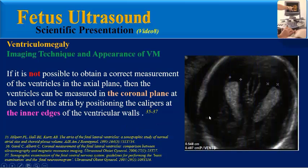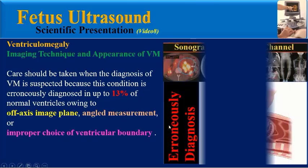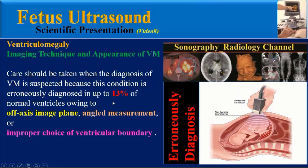The dangling choroid plexus sign refers to the downward position of the choroid plexus toward the gravity-dependent wall in an enlarged lateral ventricle atrium. Detection of this sign, or when the glomus fills less than 60% of the atrium, should prompt careful evaluation and correct measurement in the axial plane. Care should be taken as ventriculomegaly is erroneously diagnosed in up to 13% of normal ventricles due to off-axis imaging, angled measurement, or improper choice of ventricular boundary.